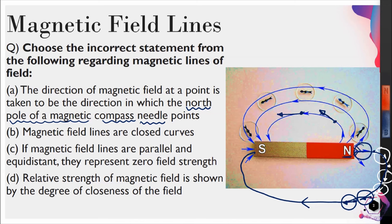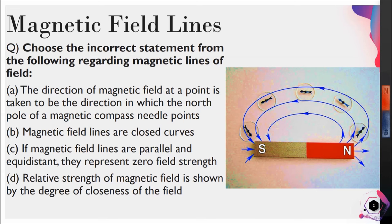If you have a compass, just place it at the point — whatever direction the north pole indicates is the direction of magnetic field. In an examination, since a compass is not available, draw a tangent at that point to get the direction. So we have learned both how to draw magnetic field lines and how to find direction from given field lines. Option A is absolutely correct.